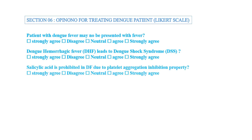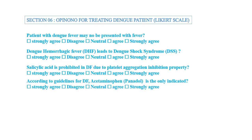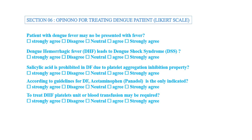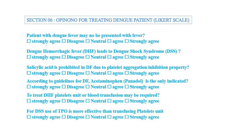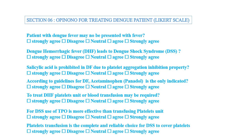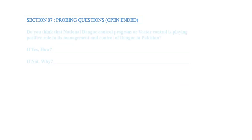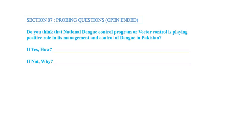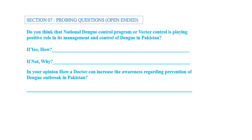In section six, you may ask for the doctor's opinion on the treatment of dengue patients, using Likert scales and closed-ended questions. You must ensure that the questions you use are fully validated with a strong background. In the last section, we use probing, open-ended questions where participants can make their own choice of answering.